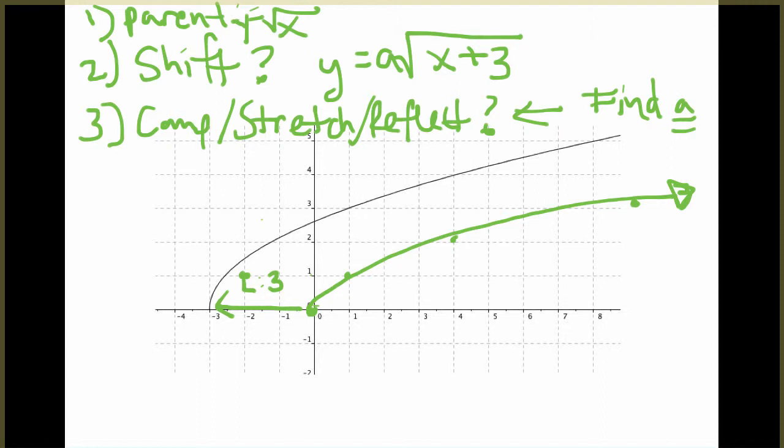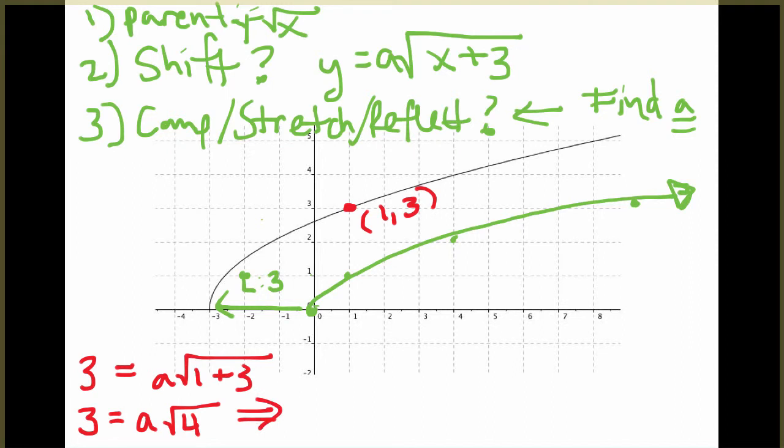So we will go about finding that. The way to find your a value is find another point on the new graph that you have, and you want it to be one that crosses perfectly. So I'm going to use this point here, (1,3), that it goes through. What I'll do is I will replace the x with 1 and I will replace the y with 3. What I get when I do that is 3 equals a times the square root of 4, which is just 2. So 3 equals 2a. And if I solve that for a, a is equal to 3 over 2, or 1.5.